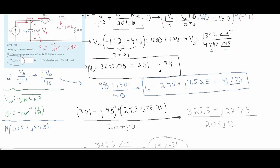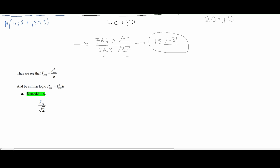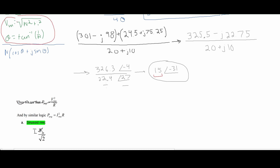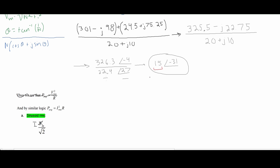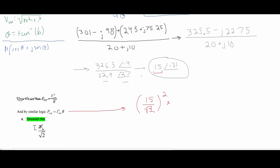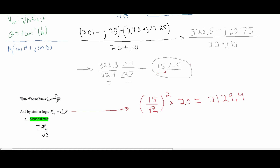Now we can plug this into our average power equation. We are using the formula with I_max rather than V_max. Since the current is in polar form, I_max is the magnitude, which equals 15. We plug this into the formula as (I_max / sqrt(2)) squared times the resistance. We want the power at the 20 ohm resistor, so we multiply by 20 ohms. This gives us approximately 2,129.4 watts as our answer — the average power absorbed by the 20 ohm resistor.